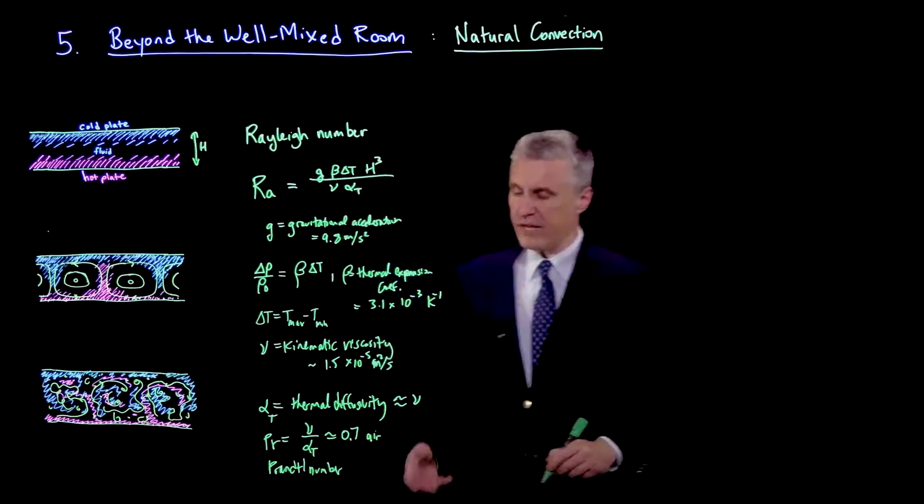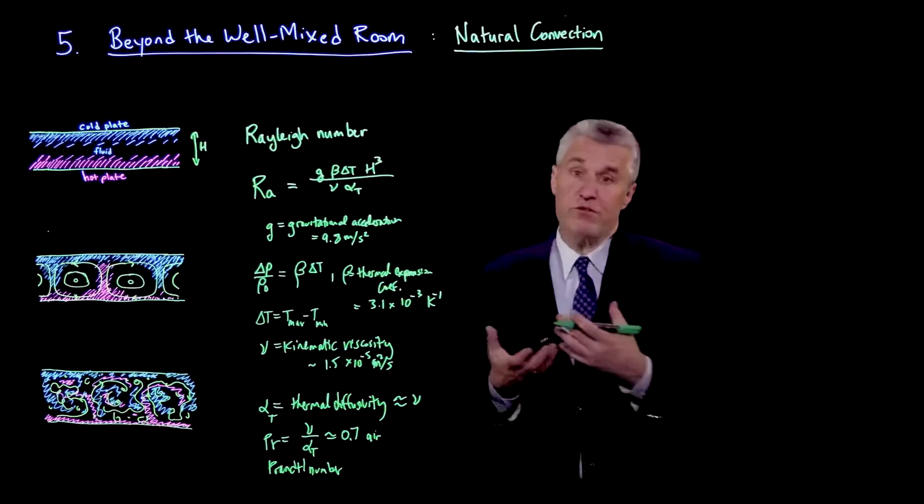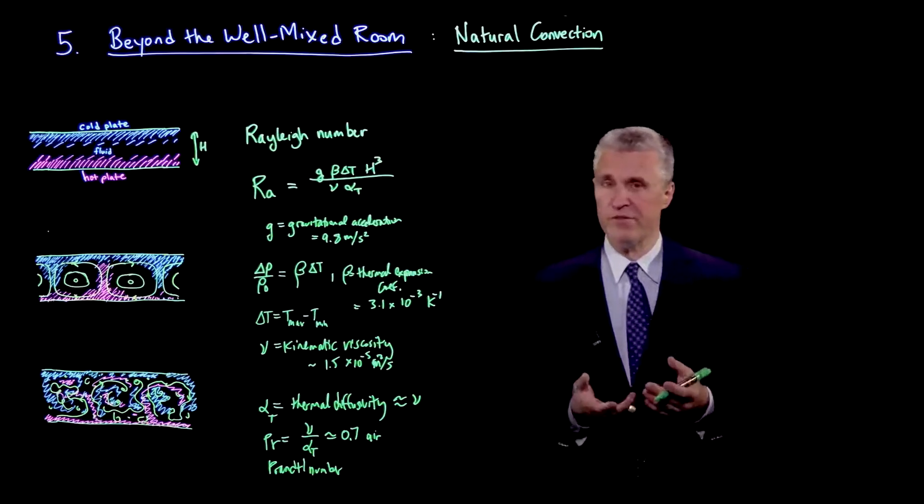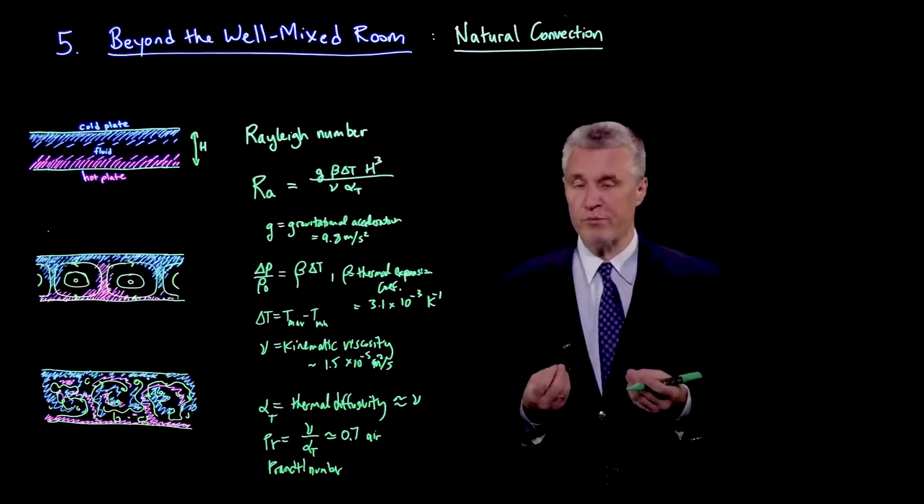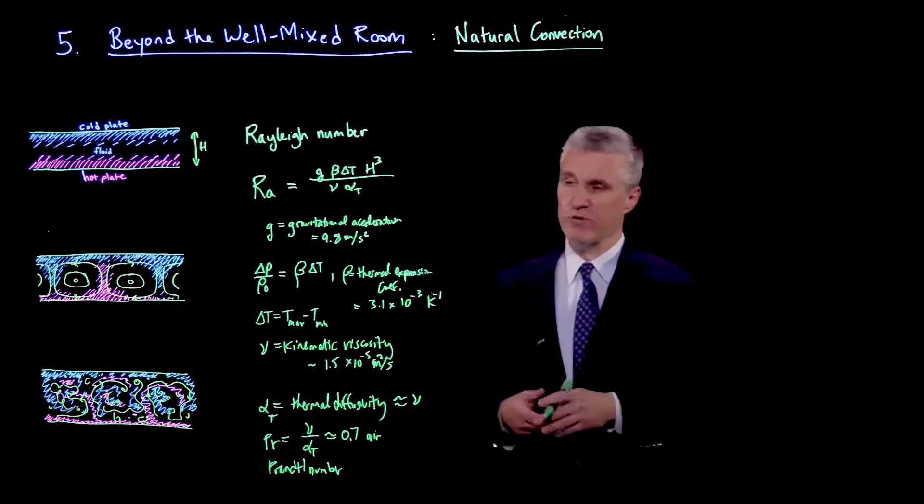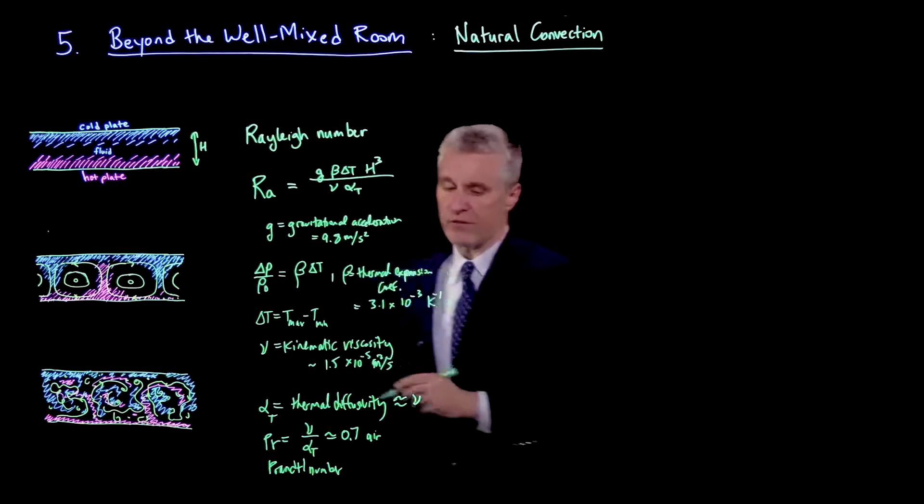For gases, the kinematic viscosity refers to the diffusion of momentum in the air, whereas the thermal diffusivity alpha is the diffusion of heat energy. In a gas, both those processes occur by collisions of molecules. Since it's the same mechanism, you have roughly the same order of magnitude of those quantities. So basically, all these quantities enter the Rayleigh number.